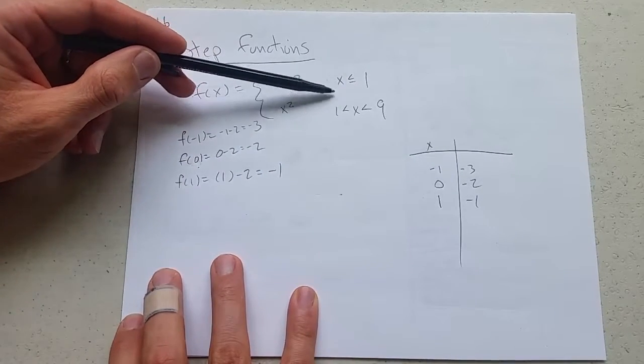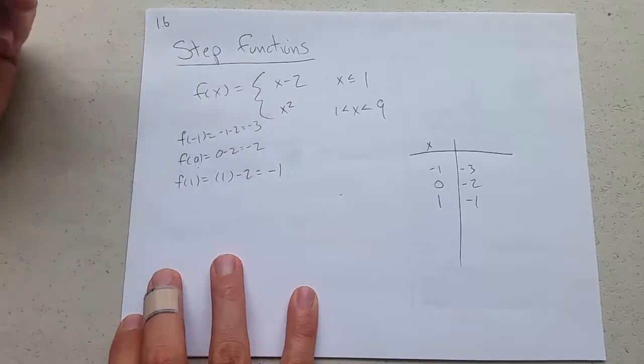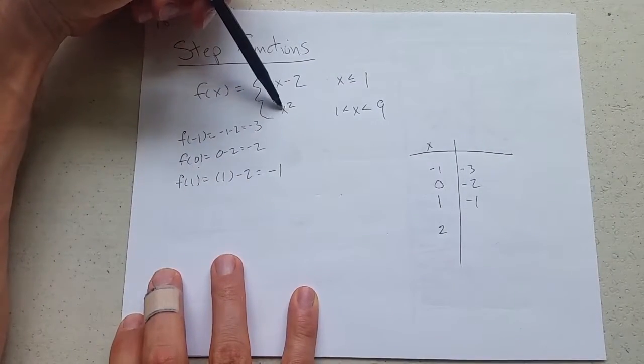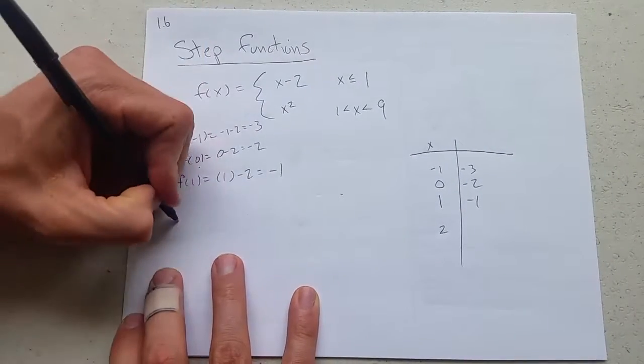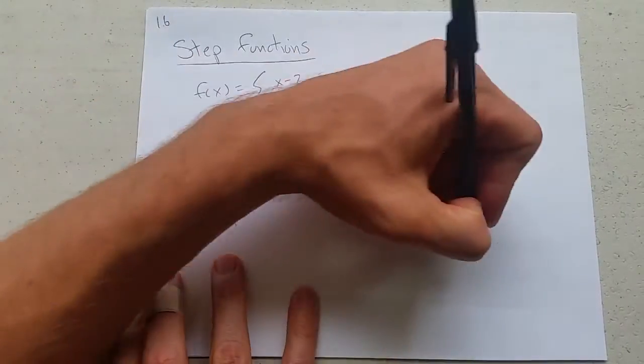Now we're going to pick something bigger than 1. We could try 2. That'll work. x equals 2. What happens when x equals 2? We're going to use piece 2. And f of 2 is going to be 2 squared, which is 4.